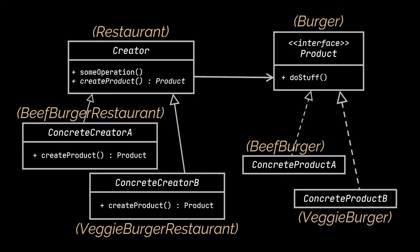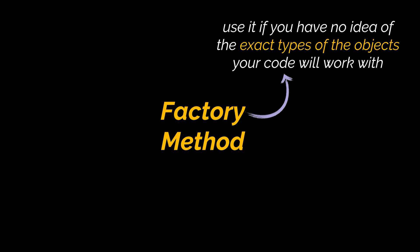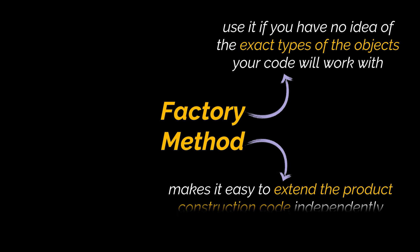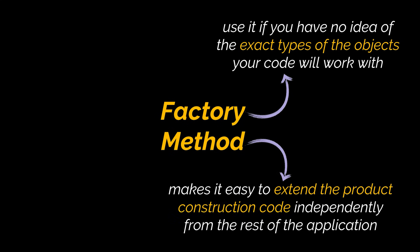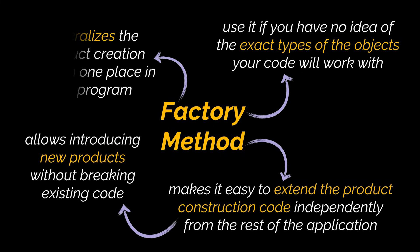Now you know how to implement the factory method pattern, but when should you use this pattern? Should you apply it on all parts of your application that have to do with creation stuff? Well, if you have no idea beforehand of the exact types and dependencies of the objects your code will work with, then it is probably a hint that you should make use of this pattern right from the beginning. As the factory method makes it easy to extend the product construction code independently from the rest of the application, it allows you to introduce new types of products into the program without breaking existing client code. By doing this, you wouldn't only be providing the users of your application with a way to extend its internal components, but also — and most importantly — you will be following the open-closed principle and the single responsibility principle, as you are centralizing the product creation code in one place in the program.